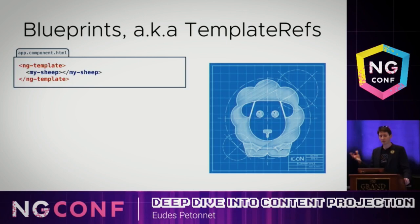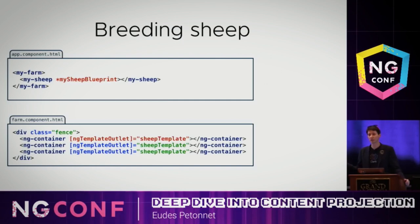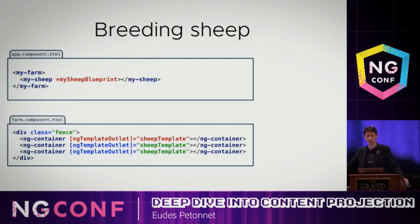Blueprints in Angular are called template refs. A template ref is basically when you put an ng-template element around something, and that something becomes a blueprint. You can use it to reproduce that content as many times as you want. On the application side, you put your pasture and your sheep inside with a structural directive. So what you're giving to the farm is not an actual sheep — it's a model of how to create sheep.